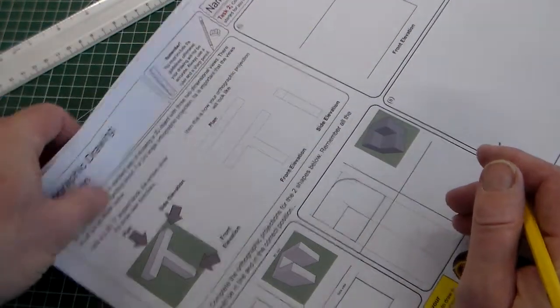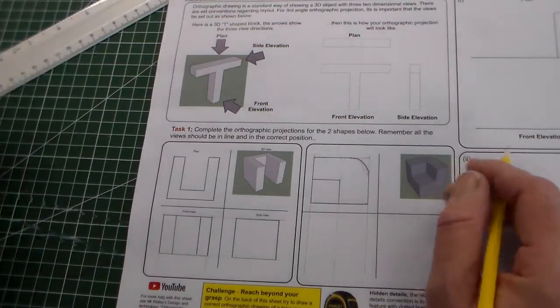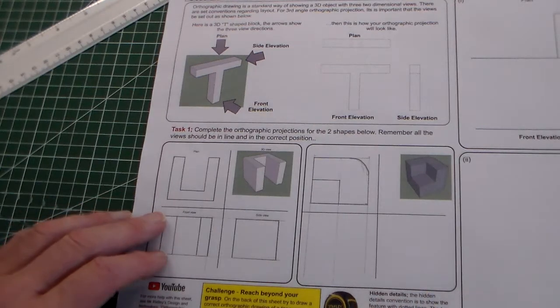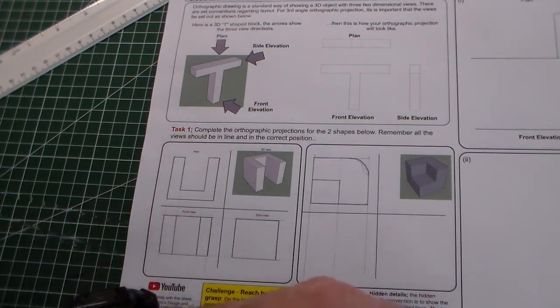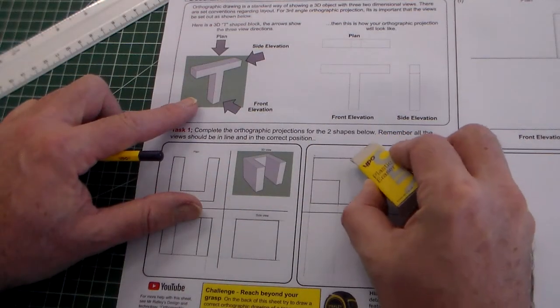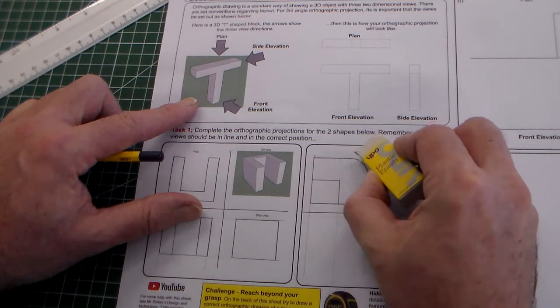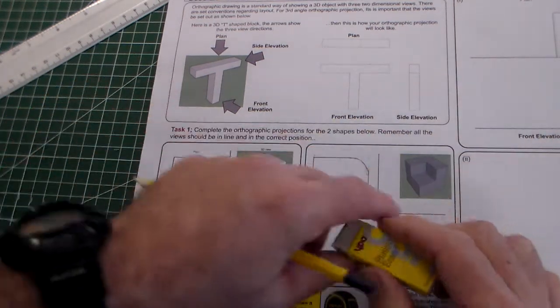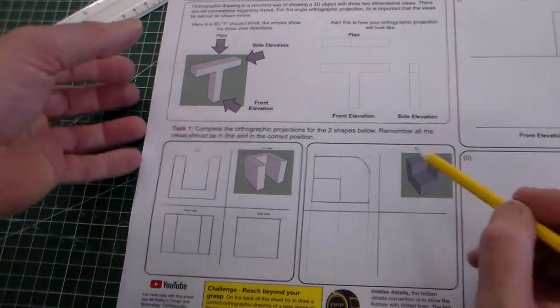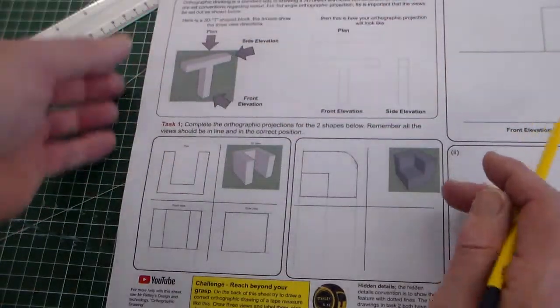If the construction lines are drawn lightly enough, you can leave those in. But I'm just going to clean up that curve a little bit there. So there's our plan view. That would be the view looking down on the shape here. And now we need to draw our front view.